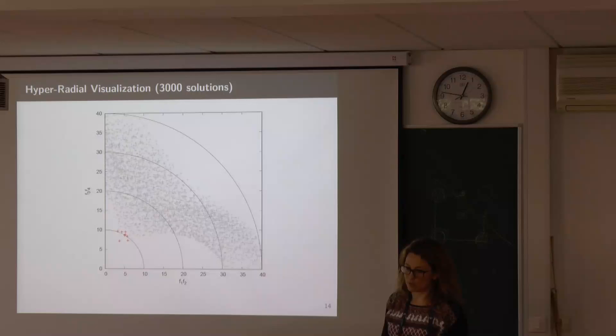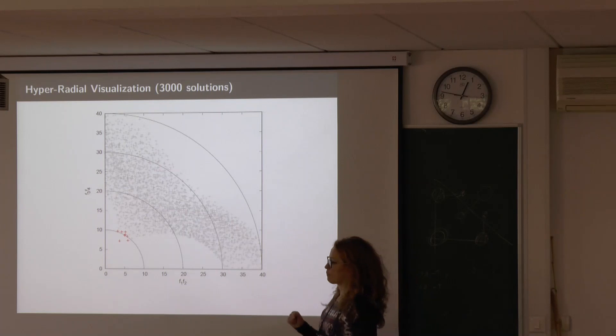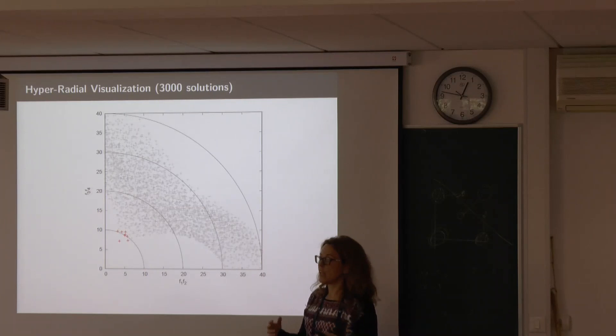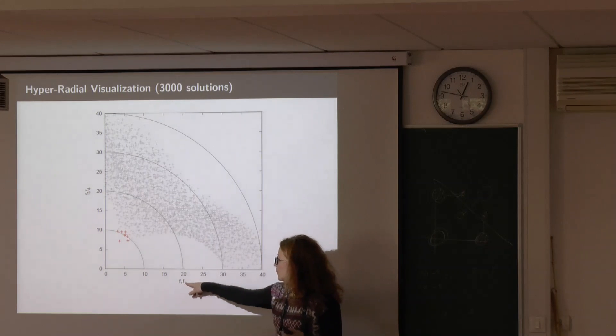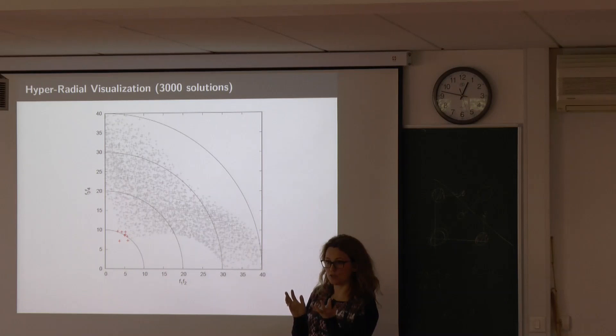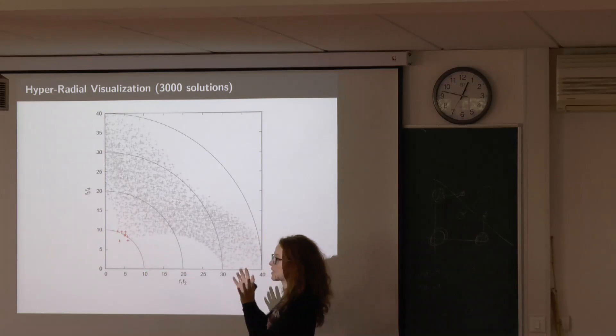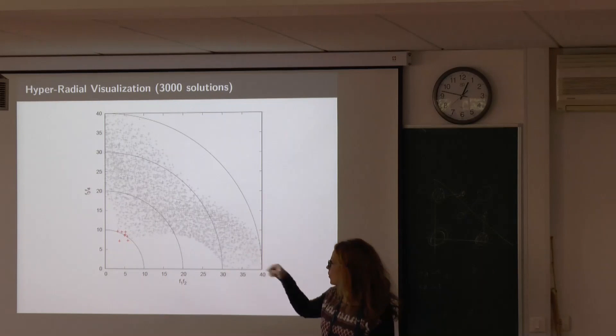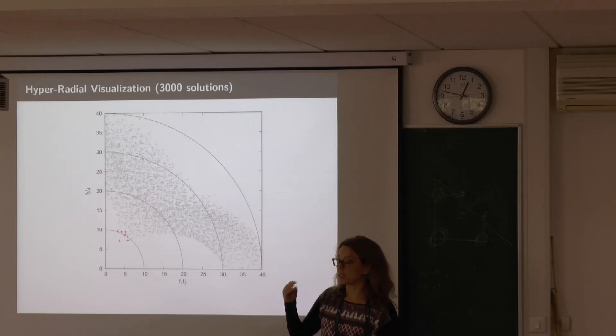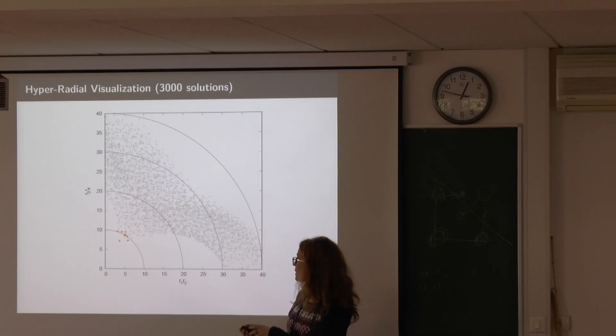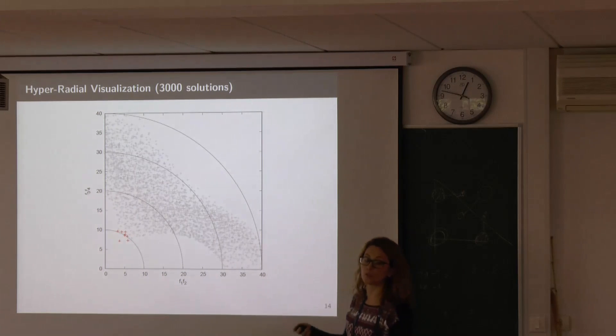Then we have hyperradial visualization, that is very similar to the level diagrams, but the distance to the ideal point, also called the hyperradius, is computed separately in the space of f1, f2, and that is used here as this value, and then separately for the space f3, f4, and this is plotted on the y-axis. Here, as well, you can see kind of sticking out some points, and these are the knee points that we are interested in.